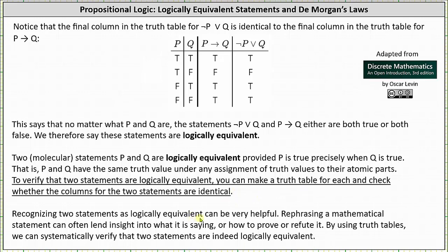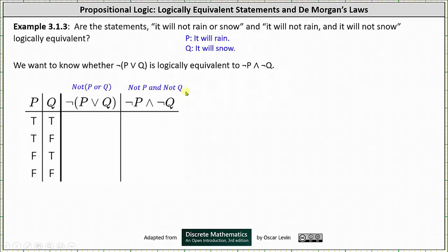Recognizing two statements are logically equivalent can be very helpful. Rephrasing a mathematical statement can often lend insight into what it is saying or how to prove or refute it. By using truth tables we can systematically verify that two statements are logically equivalent. Let's look at an example: are the statements 'it will not rain or snow' and 'it will not rain and it will not snow' logically equivalent?